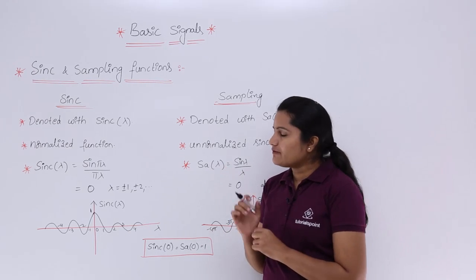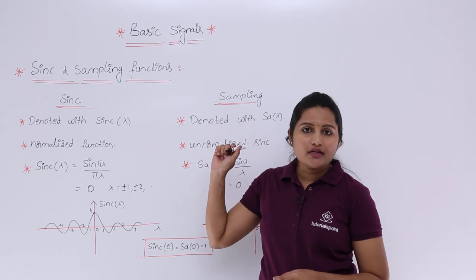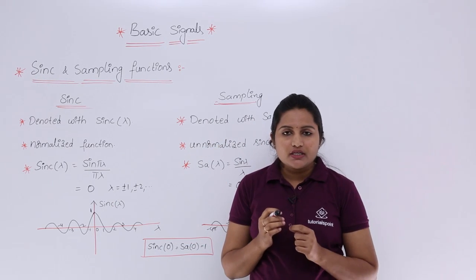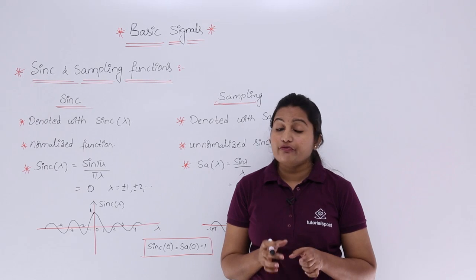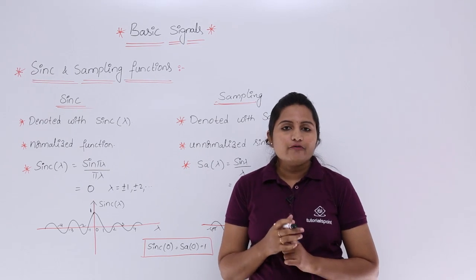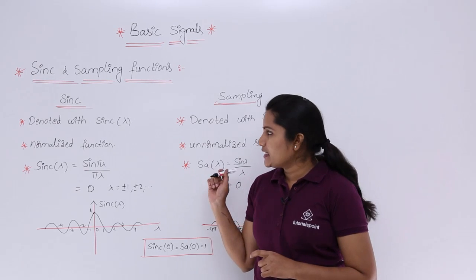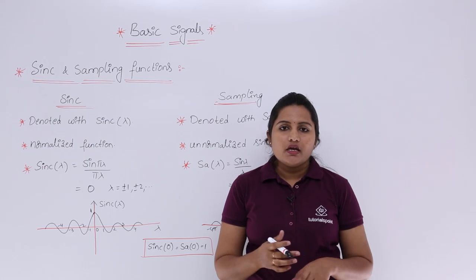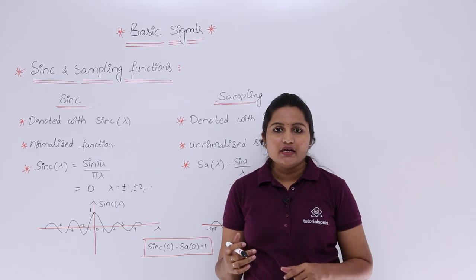This is about sinc function and sampling function — sinc is normalized and sampling is similar to the unnormalized sinc function. These two are very important from the GATE exam point of view. When solving problems related to Fourier transforms and Laplace transforms, sinc and sampling functions play a major role. In the options they may give answers in terms of sinc or sampling.